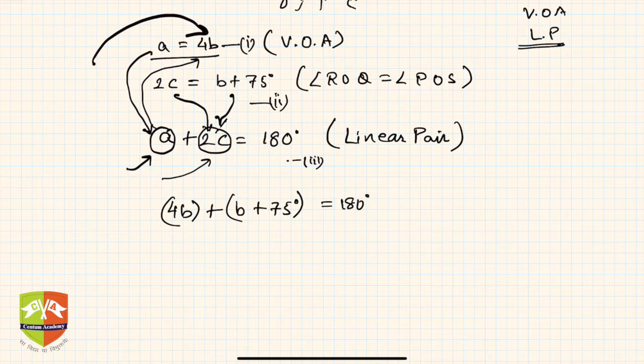Why is it needed? How does it help? Because now I am getting an equation in only one variable, that is b. Hence 5b plus 75 is 180 degrees. So 5b will be equal to 180 degrees minus 75 degrees, which is 105 degrees.